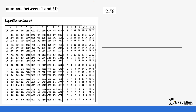Example: log(2.56). The number 2.56 is greater than 1 but less than 10, so we can read it directly from the table. We go to where 2.5 is in the table, then move to the column for the second decimal place, 6. This gives us 0.4082.